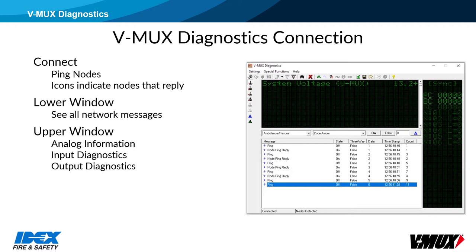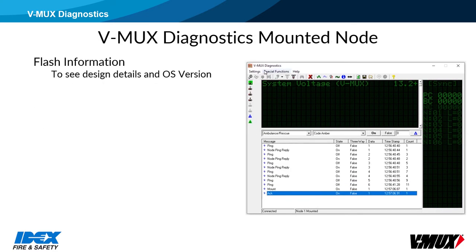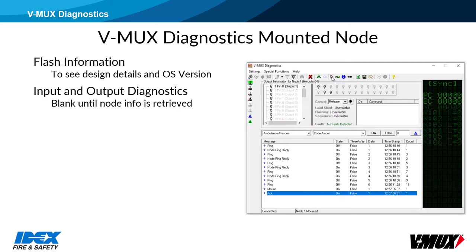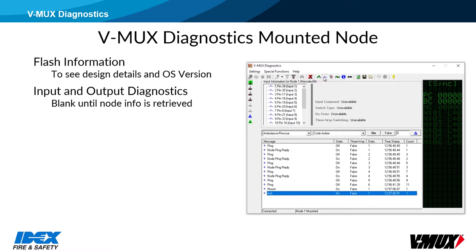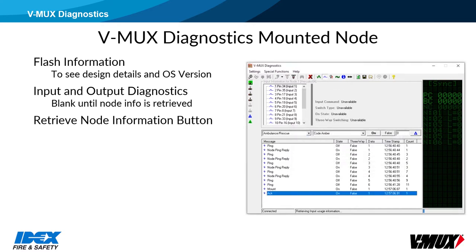You can also look at inputs and outputs for IO nodes. Information can be retrieved from a node — first click the node icon, and then hit the mount node button. The node icon will turn green. Click the flash information button to see details about the design program and node operating system loaded into the node. Click the output diagnostics button to see node outputs, and then click input diagnostics to see inputs. At this point you can see only input and output numbers and the corresponding connector pins. To retrieve input and output details from the mounted node, click the retrieve node information button. A prompt will ask if you want to download input and output names — click yes, even though it will lengthen the download time.